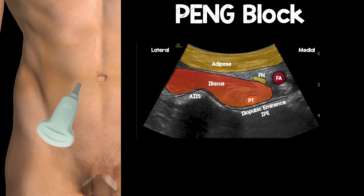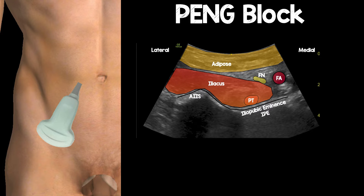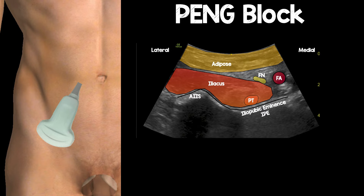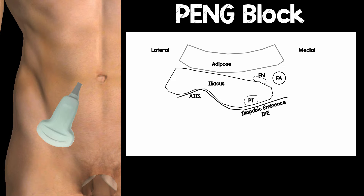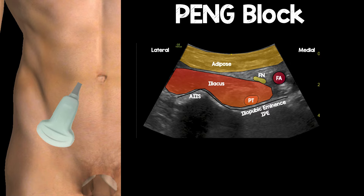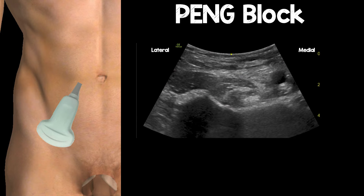If you place a probe in the correct area, this schematic diagram shows the anterior inferior iliac spine, the iliopubic eminence as part of the superior pubic ramus, the psoas tendon, the iliacus, and most importantly the femoral nerve, which we want to avoid. If sartorius were visualised, between sartorius and tensor fasciae latae lies the lateral cutaneous nerve of the thigh. One must always be careful during needle insertion to avoid these structures.